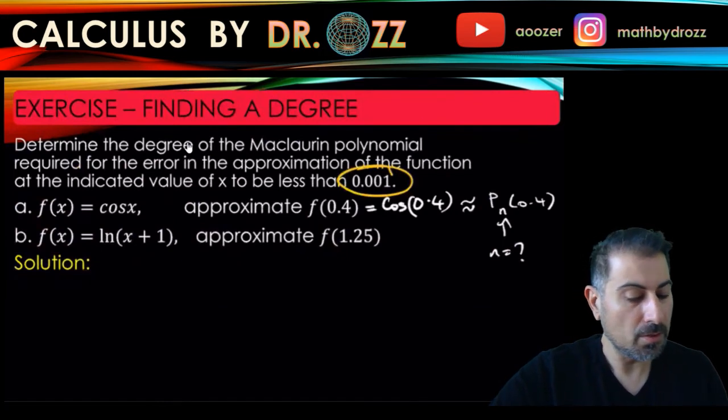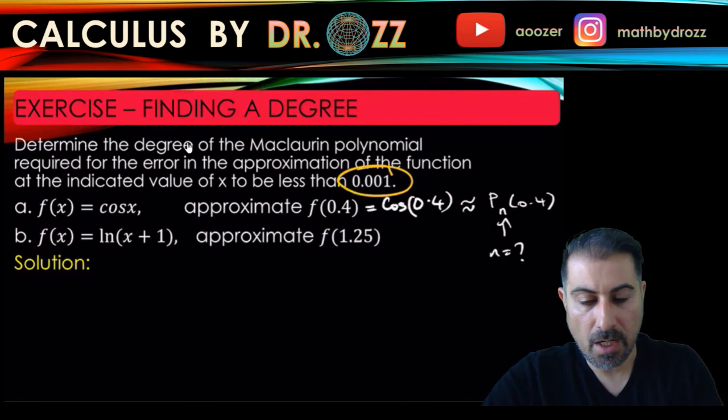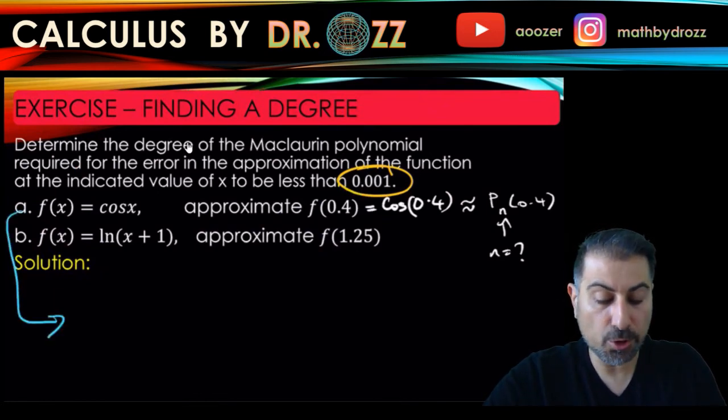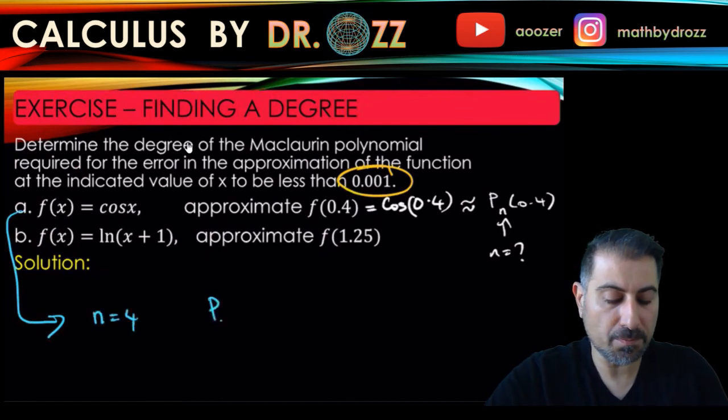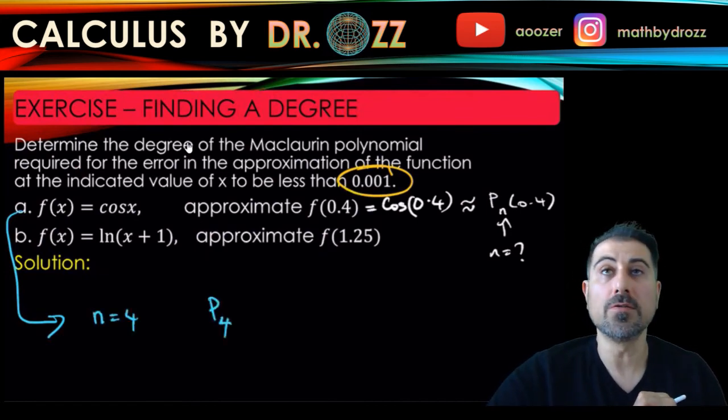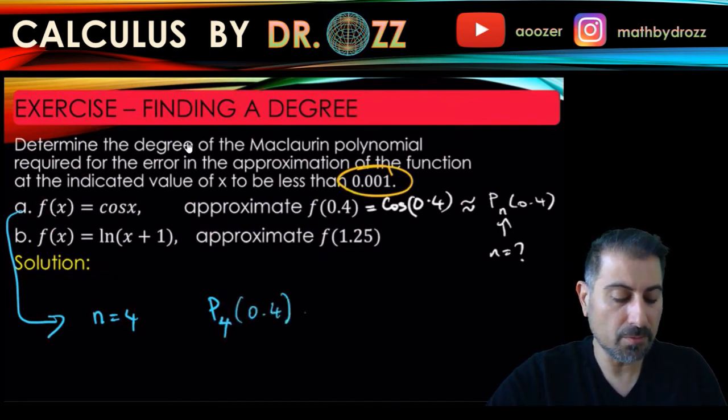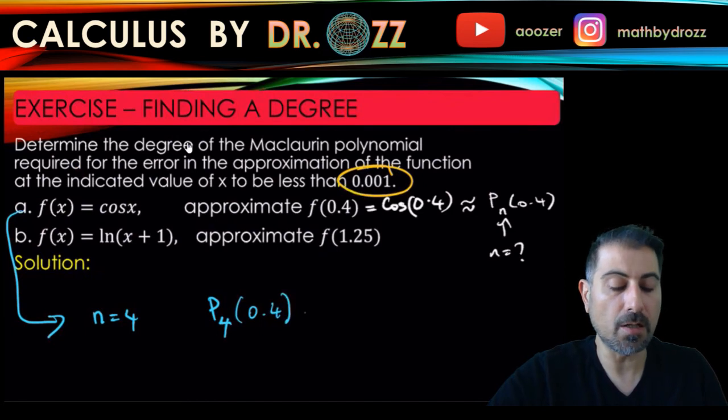So this number is already less than the maximum error I was looking for in the statement of the question. So that means that I should retain, as an answer of this question, I should retain four terms. So n equals 4, so I should keep P4 to do this calculation, evaluate it at 0.4. And if you have time,